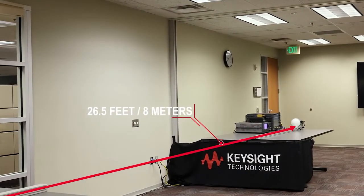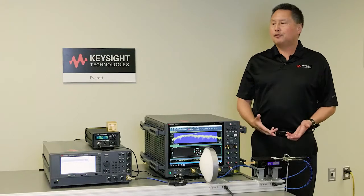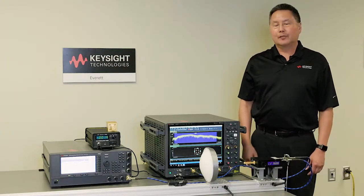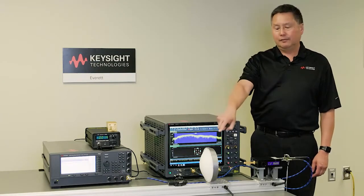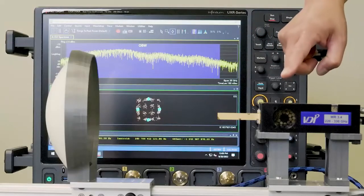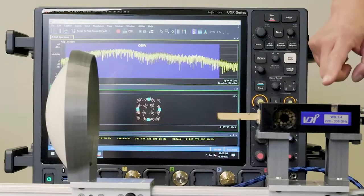So now let's take a look at the receive side. We have our receive lens picking up the collimated beam from the transmit side. Then we have a diagonal horn antenna to pick up the signal to feed it into the VDI downconverter.